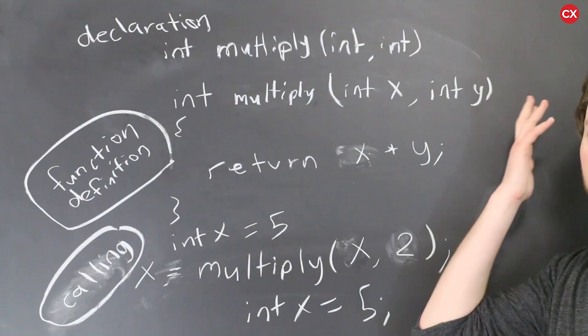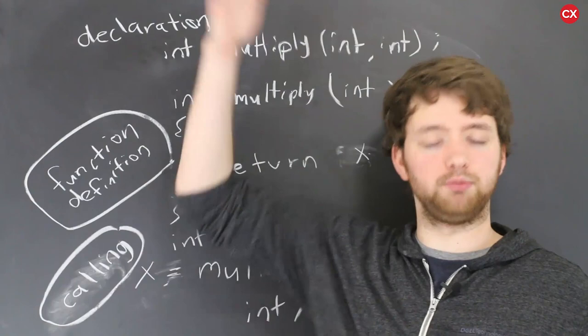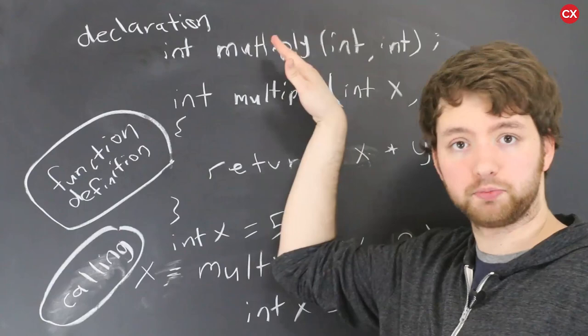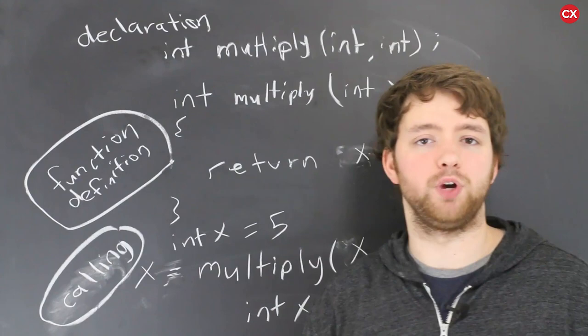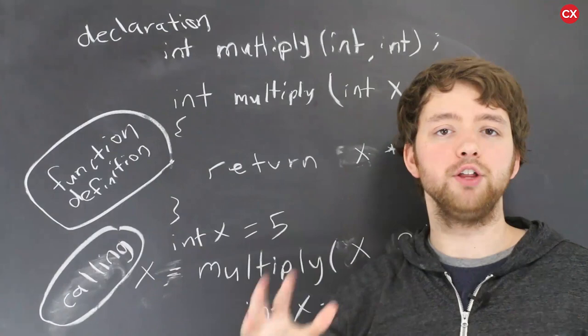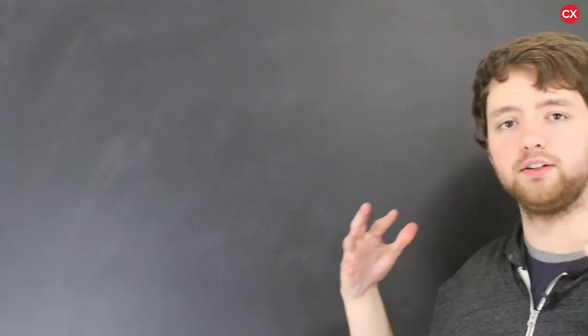Some people don't want to have the declaration and the definition together so they will actually create a separate declaration and it would look something like this. Basically the same thing we just got rid of the variable names. That is the declaration and that would have to exist somewhere probably towards the top of your program before anywhere in your code tries to call multiply. Then you could put the definition down at the very bottom and just kind of ignore it. So that's one situation sometimes people just like to have the declaration up at the top and the definition at the bottom.